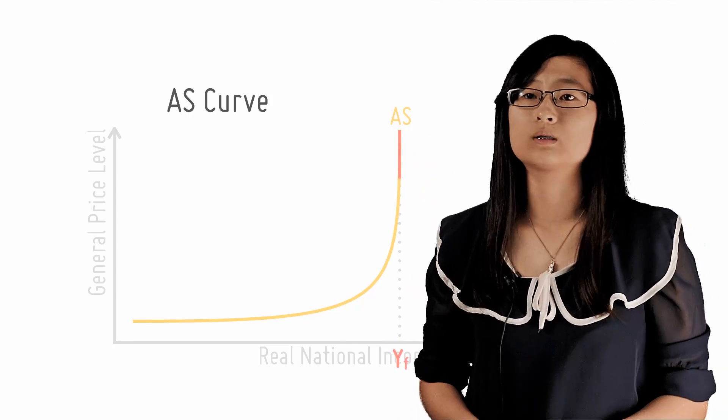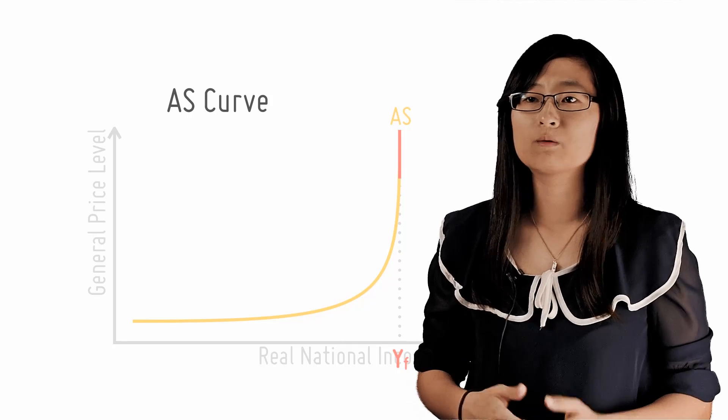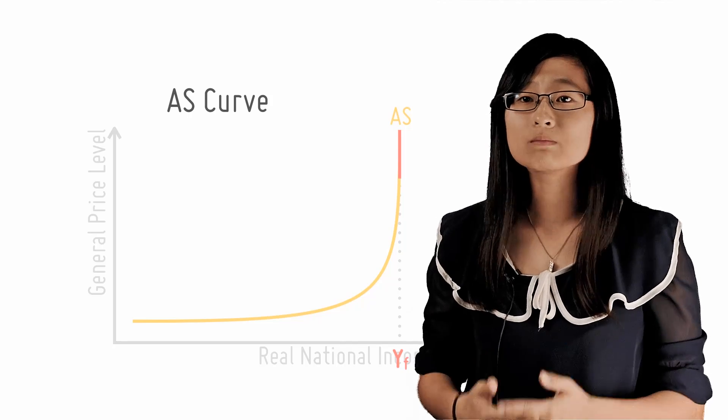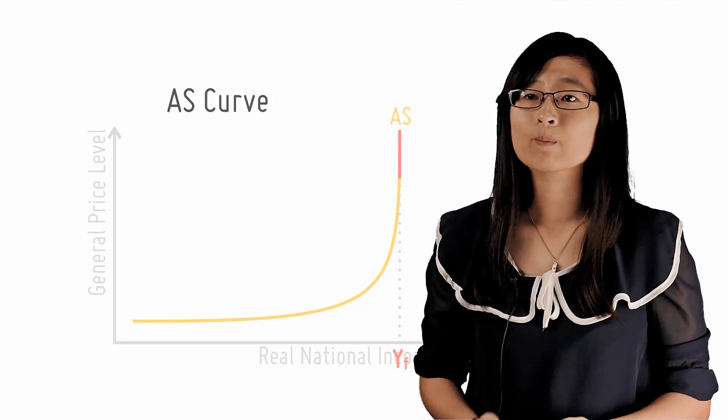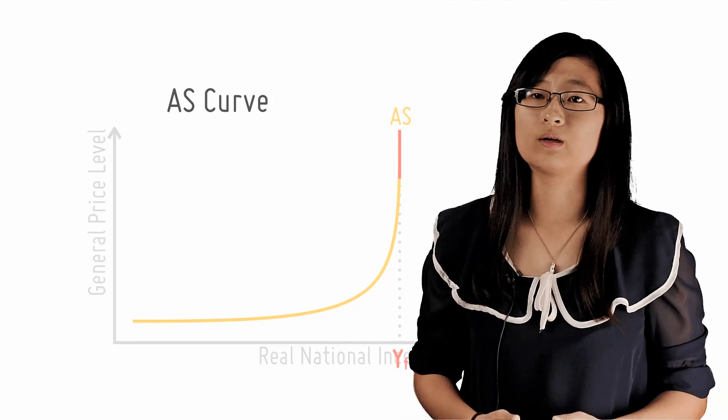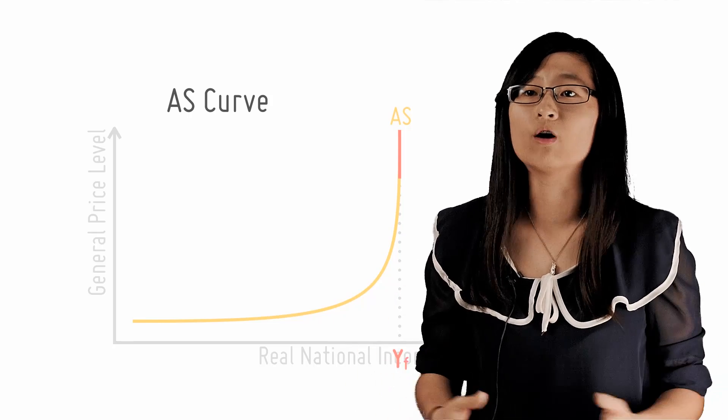On the extreme right, we have the vertical classical range. At this point, the economy has reached full employment. What this means is that all available resources have been efficiently utilized. Output cannot increase any further because the economy has simply run out of raw materials.